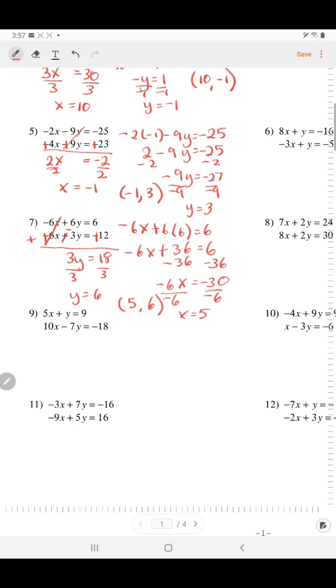Number 9 is different. Neither of the coefficients match. But we can force them to match by multiplying one of the equations. If I want the x's to match, I will multiply the first equation by negative 2, so that it now has a coefficient of negative 10, which is opposite of the 10. So I'm going to distribute it here. Negative 10x. Distribute. Negative 2y. Equals. Distribute. Negative 18.